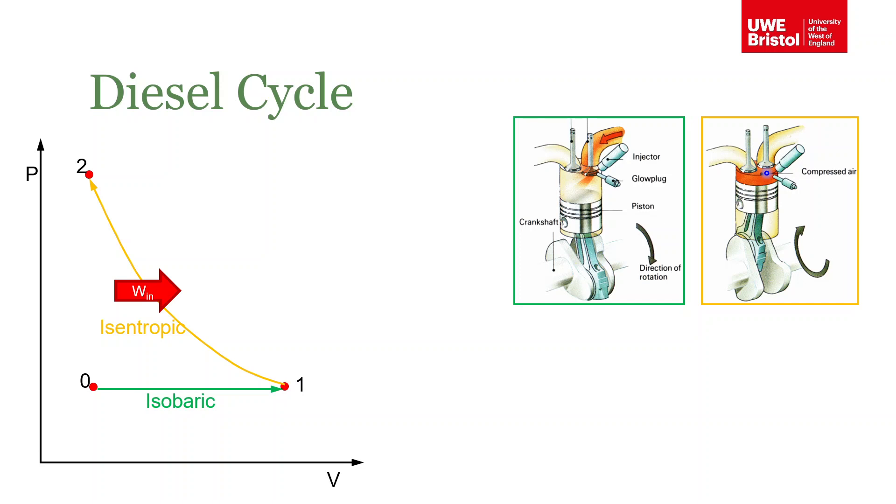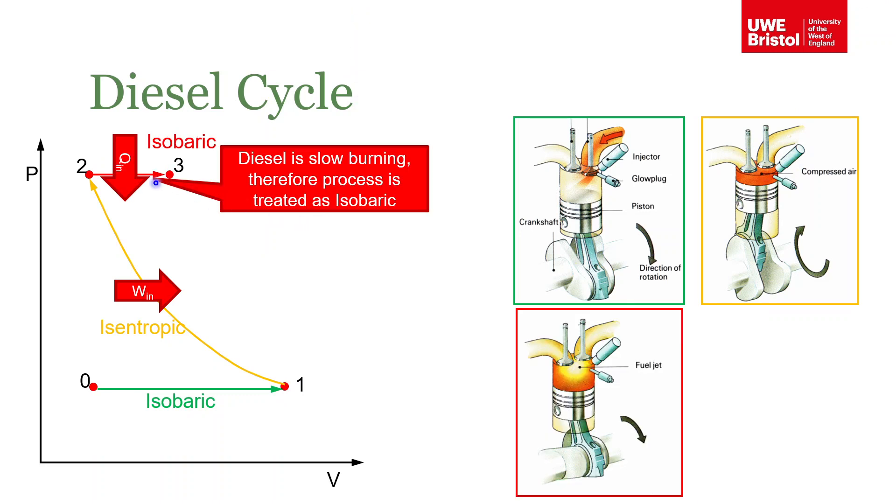What happens is as the fuel is sprayed into the cylinder, the fuel starts to burn, and more of it's injected and more of it burns. This process can be thought of as much slower burning compared to the instantaneous burning of the gasoline in the Otto cycle. You think of the diesel burning slower because of the way it's injected, so what that means is we end up effectively with an isobaric process.